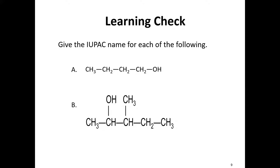Let's look at example A. We count the longest chain of continuing carbons: one, two, three, four. Four is our longest chain. We start numbering on the end closest to the OH group — it's technically at the end, so this becomes 1-butanol. We use butane, drop the E, add OL: 1-butanol.